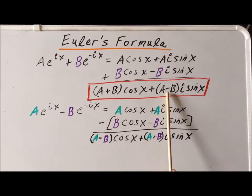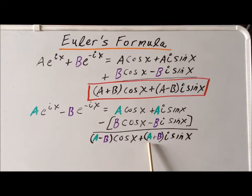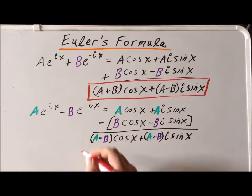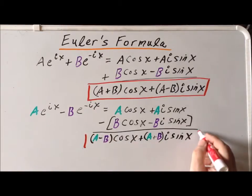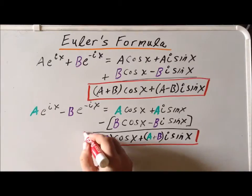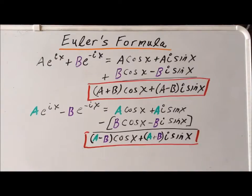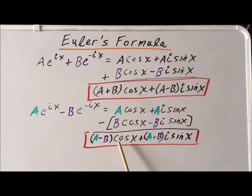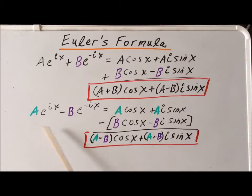As one last check, if a and b are both equal to 1, the cosine coefficient becomes 1 minus 1 equals zero, so that term drops out. The sine coefficient gives 1 plus 1 equals 2i sine of x, which is exactly what we determined before for e to the ix minus e to the minus ix. This confirms the formula is correct.